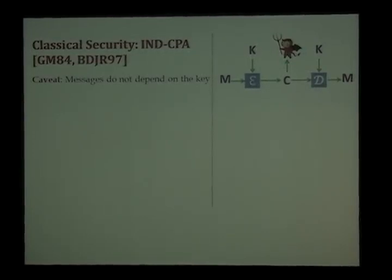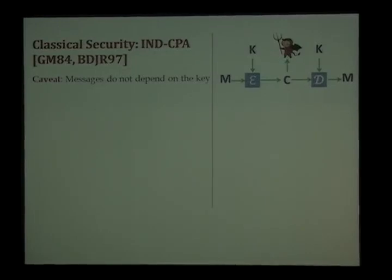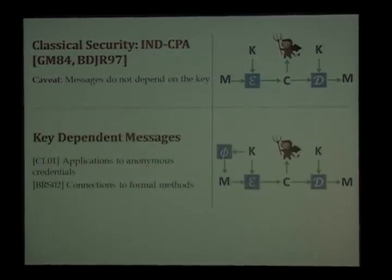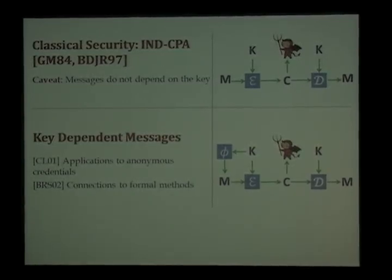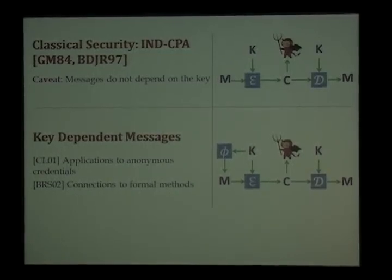But INDCPA comes with a caveat: messages cannot depend on the key. There are certain applications where we would like security even when the message depends on the key. If we had this kind of security, we could get anonymous credential schemes, as was shown by Kamanish and Lishanskia in 2001. A year later, Black, Roggewe, and Shrimpton showed connections between key-dependent messages and formal methods in cryptography. They modeled key-dependent messages by deriving the message from the key using a message-deriving function phi.